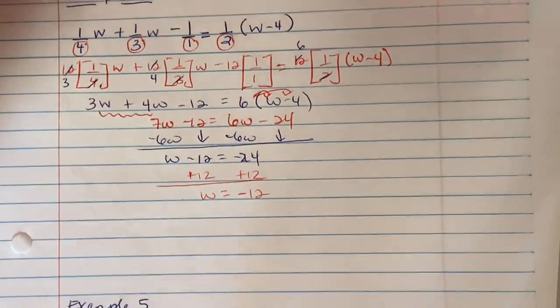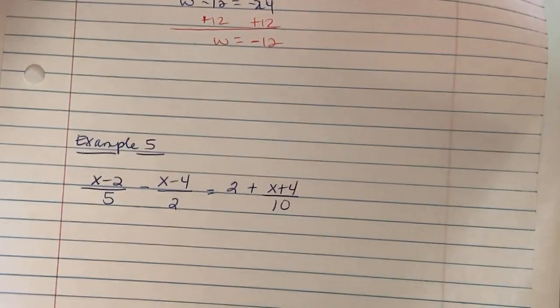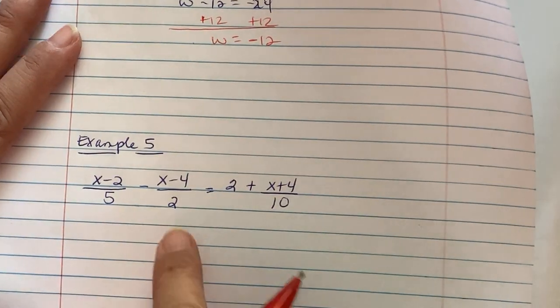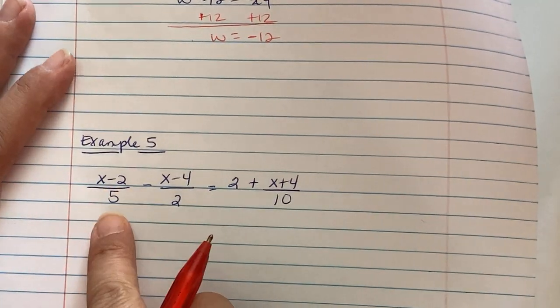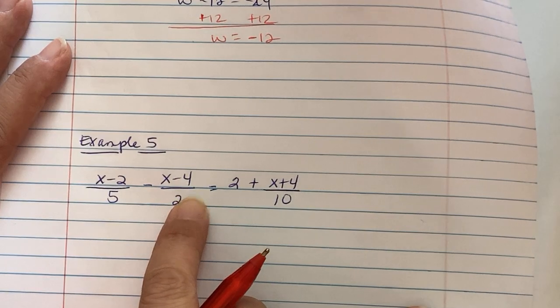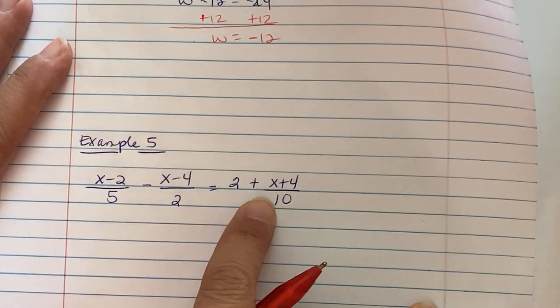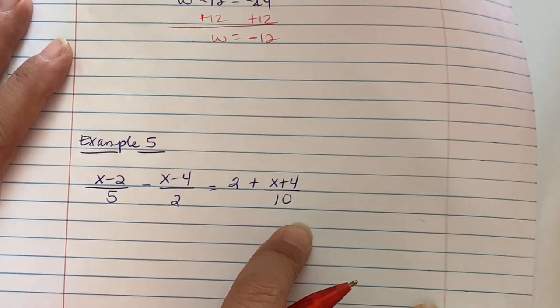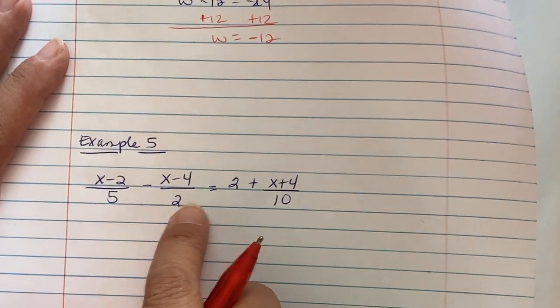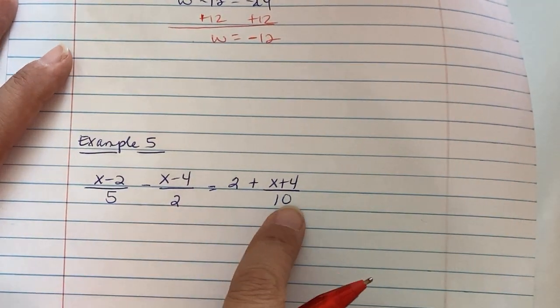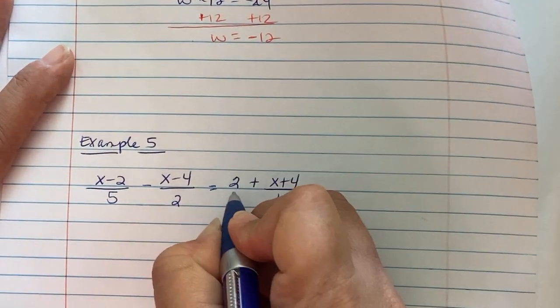Example 5. Same property rules. We have x minus 2 over 5 minus x minus 4 over 2 equaling 2 plus x plus 4 over 10. So fraction setup, fraction setup, whole number, fraction setup. First thing, make this an improper fraction.